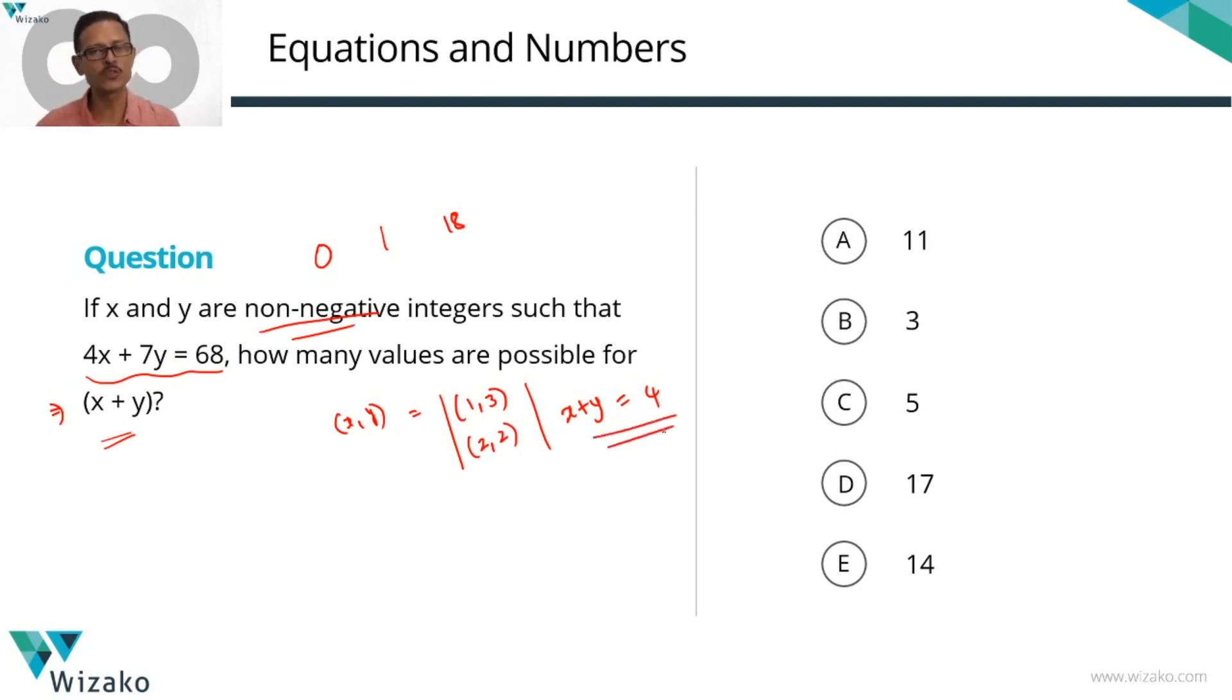In our mind, we'll say that if we can find the number of different values that x and y can take, I've actually computed the number of different values that x plus y will take. Need not always be the case. So watch out for, are they asking how many values does the x comma y pair take? Or is it asking for how many values does x plus y take? Let's get started.